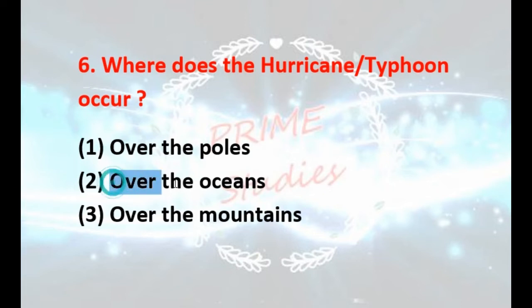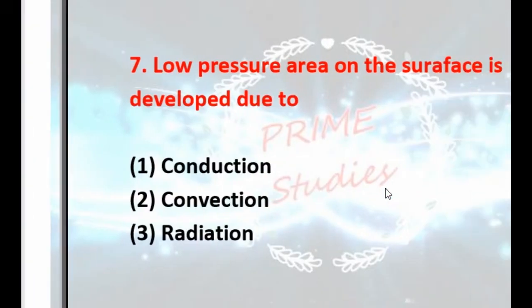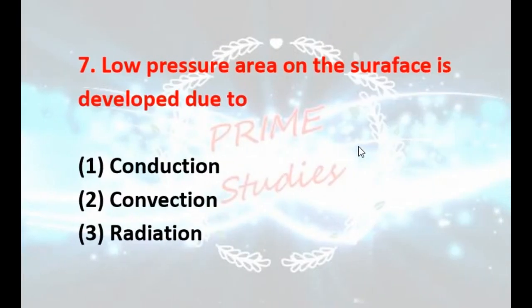Where do hurricanes and typhoons occur — over the poles, over the oceans, or over the mountains? Your answer is over the oceans. Low pressure area on the surface is developed due to conduction, convection, or radiation? It is due to convection.